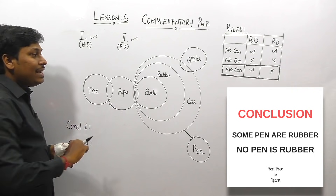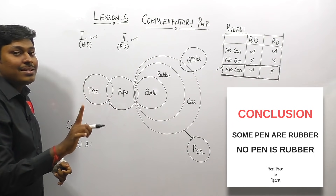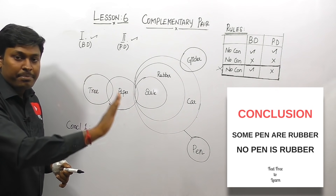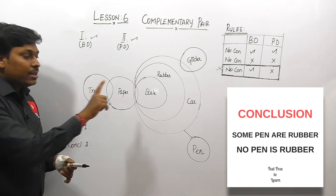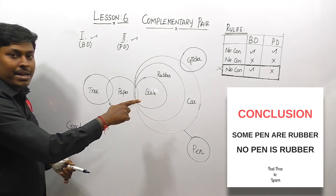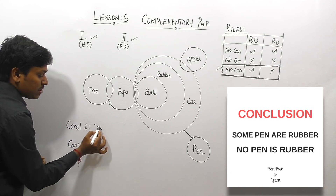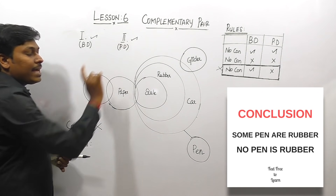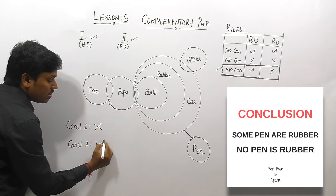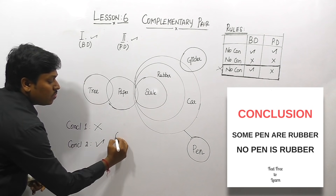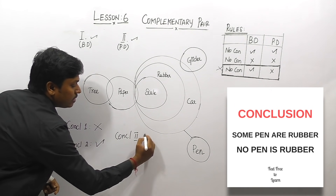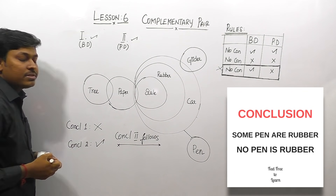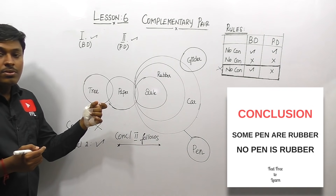Since the 'No' conclusion is true in both diagrams, it does not satisfy rule number three, and we should not say the answer is 'either or'. In this case, check conclusion one and conclusion two separately. Conclusion one — 'Some pen are rubber' — is false. Conclusion two — 'No pen is rubber' — is true in both basic and possible diagrams. So the answer is 'conclusion two alone follows'.